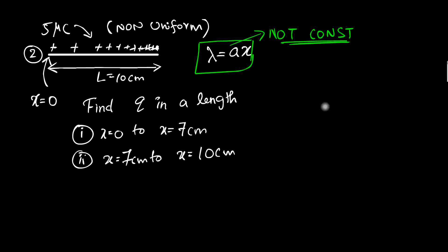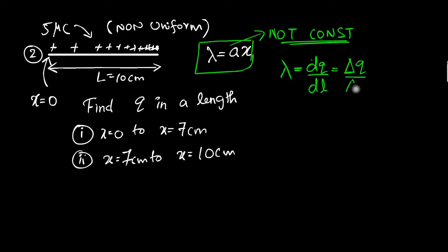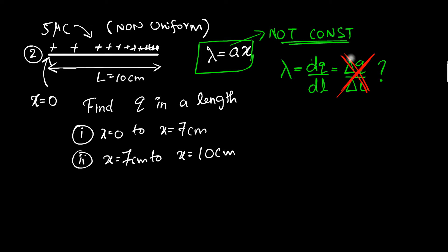So what is the amount of charge from 0 to 7 centimeters now? Can I use the same approach as before — saying λ = ΔQ / Δl? The answer is a big fat no. You cannot do that anymore because λ is changing along the line. The formula dq / dl = λ is still fine for an infinitesimal dl, but you cannot use a macroscopic ΔQ / Δl when λ varies.